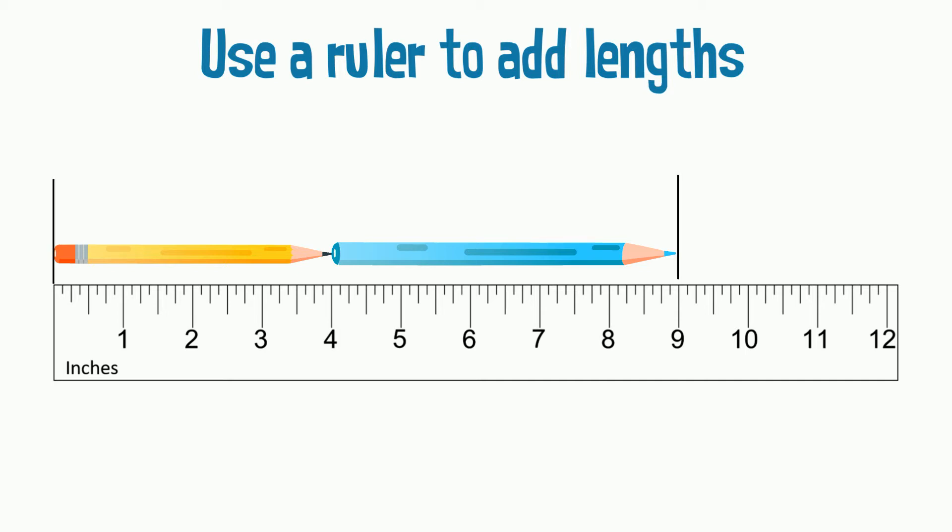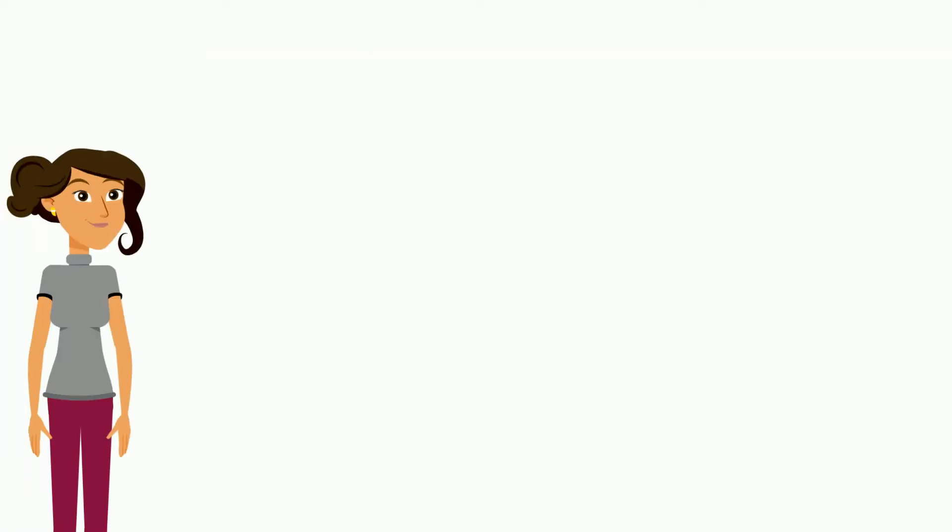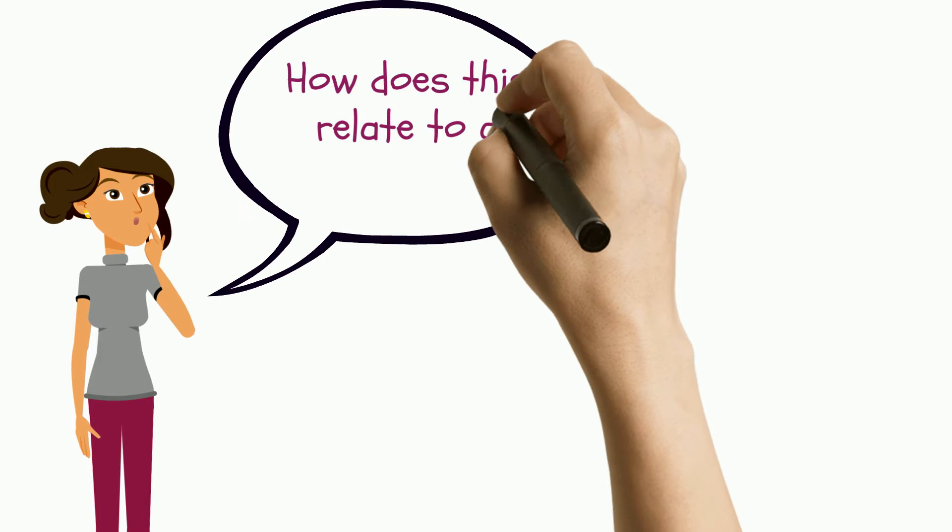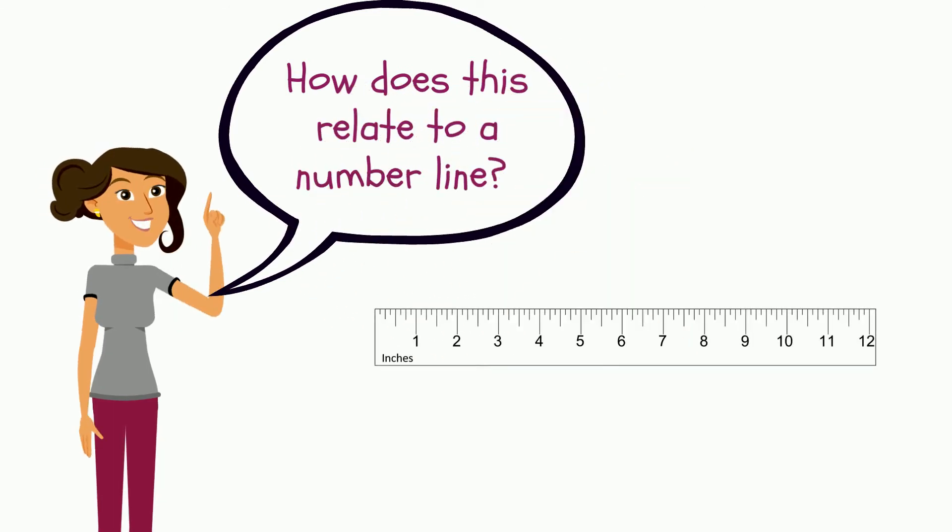But how does this relate to a number line? Just like a ruler has evenly spaced numbers known as inches, a number line also has evenly spaced numbers.